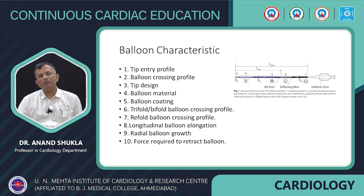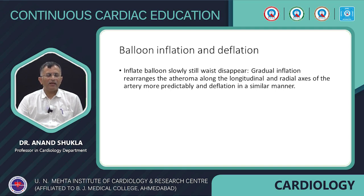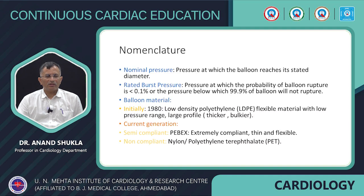These are the important factors one should consider. Usually the balloon should be inflated gradually to rearrange the atheroma along the longitudinal and radial axis of the artery more predictably, and also deflate in a similar manner. Nowadays, rapid inflation and rapid deflation is sometimes preferred by some operators, but the standard is gradual inflation and deflation.